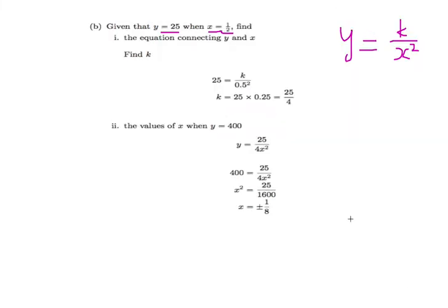In part B, using this information, they want you to find the equation connecting y and x. It's obvious you have to find k. We learned in previous videos that k is a constant, meaning it's a number. There's a constant for these equations, and they're giving you information that y equals 25 and x equals one-half.